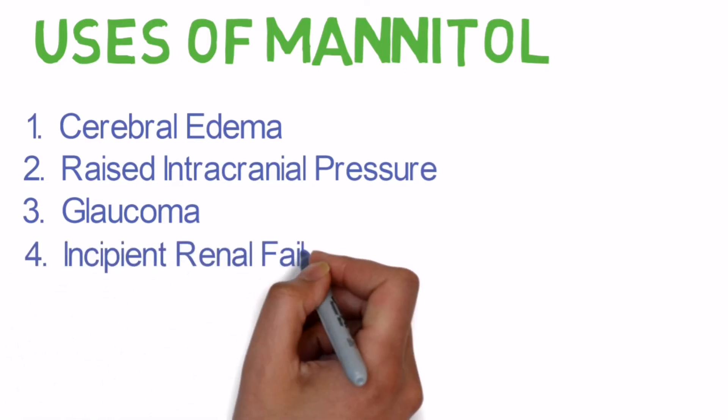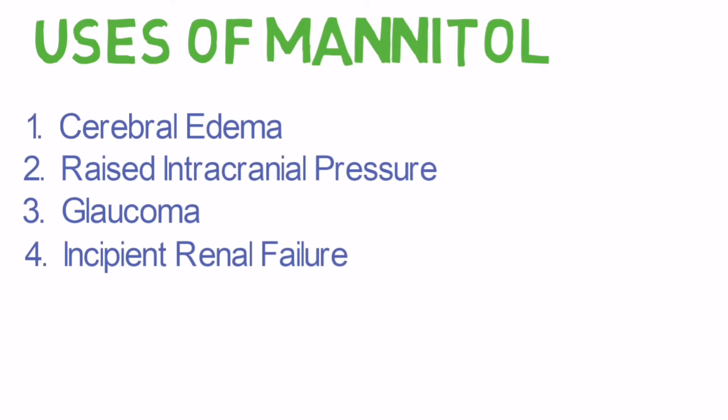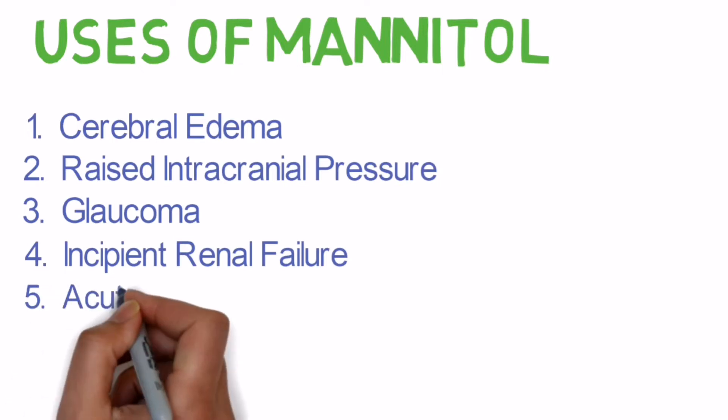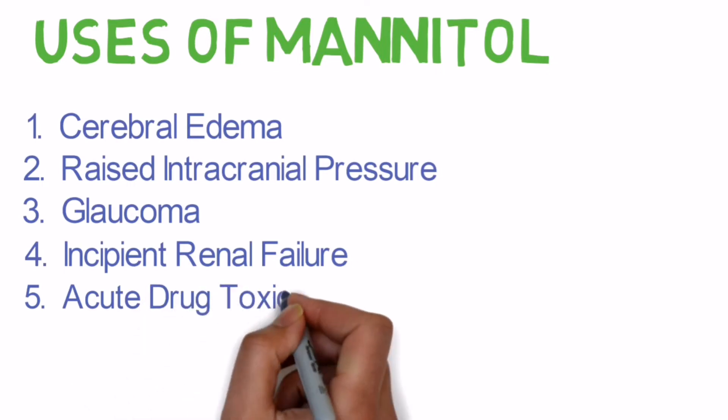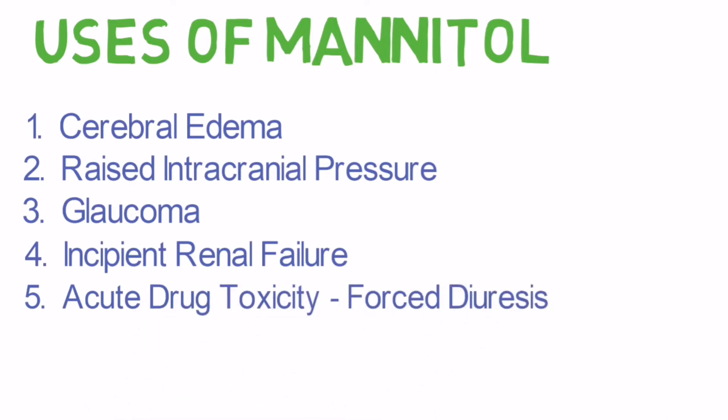Fourth use: incipient renal failure, meaning early renal failure. Mannitol increases renal blood flow and consequent renal functional capacity, and helps to prevent fluid overload and anuria. Fifth use: acute drug toxicity by forced diuresis. Increase in renal blood flow and urine volume helps in excretion of water-soluble drugs in acute toxicity, such as cisplatin.